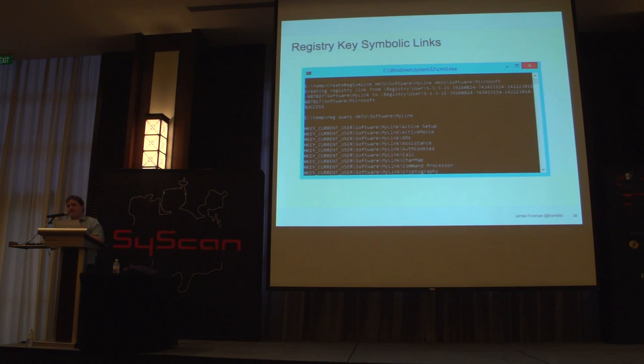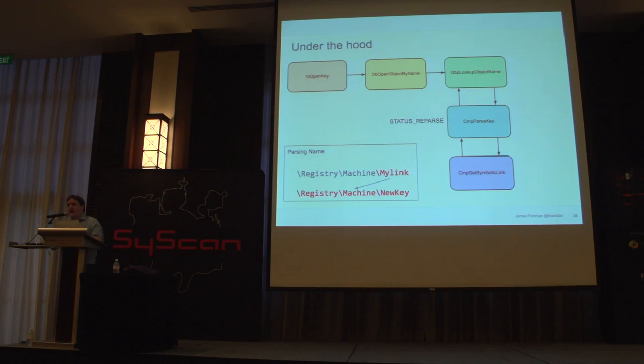The next symbolic link type is registry key symbolic links — I won't discuss these in great detail, but the implementation is instructive. It's almost exactly the same as the object manager symbolic link functionality. They've replaced ParseSymbolicLink with ParseKey as an additional function to pull out the symbolic link data — effectively doing the same thing: reading out the symbolic link string, modifying the current path, and returning STATUS_REPARSE to restart the lookup process.